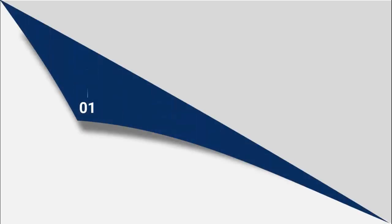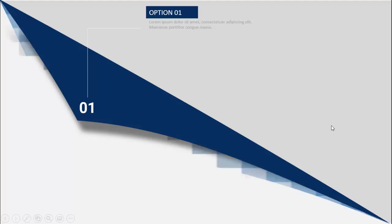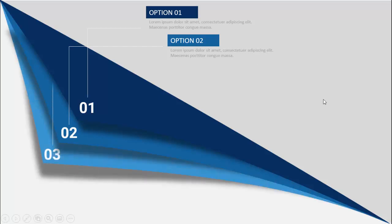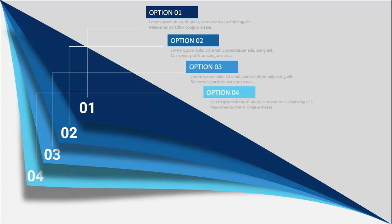In today's tutorial, I'm going to show you how to make a four-page folding option slide in PowerPoint. When I click, you can see a first page comes with the shadow effect, and you can add the option number here and the detail text. On my next click, it will show option 2 with some light blue color, then option 3, and then the last option 4. Depending on your requirement, you can increase or decrease the pages.